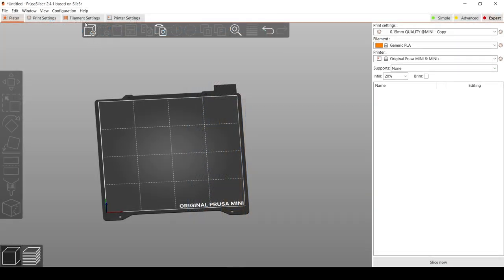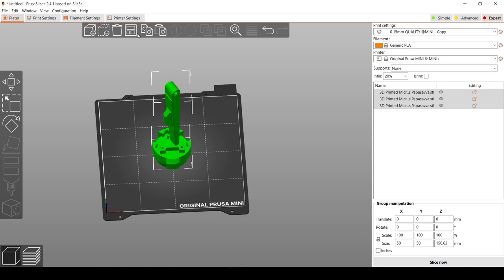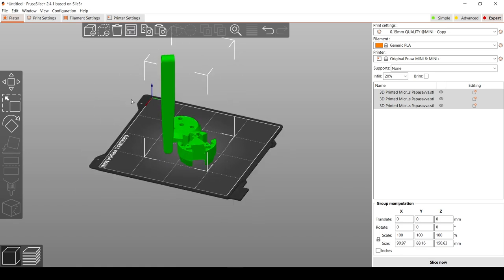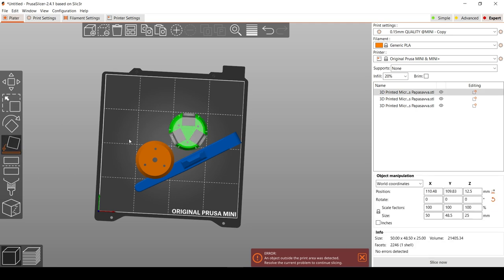I'm going to now show you how I set up the files to print using the Prusa Mini and Prusa Slicer. After importing all 3 part types, I arranged them using the Place to Face tool.